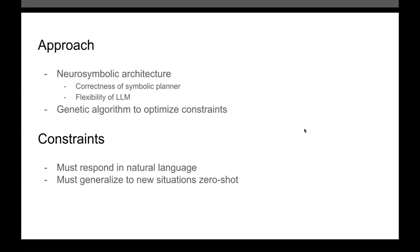This system is integrated into the broader ONR-CHI cooperative planning agent. Some of the constraints that went along with that are that the interface developed for it must be able to be interacted with via natural language, and the planner must be able to generalize to new domains without additional training, as the domain may change partway through the system being used.